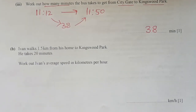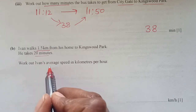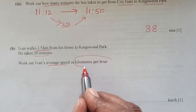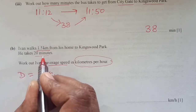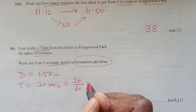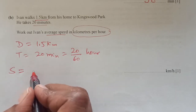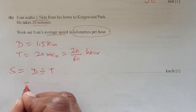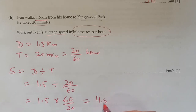Part B: Ivan walks 1.5 kilometres from his home to Kingswood Park. He takes 20 minutes. Work out Ivan's average speed in kilometres per hour. Distance is 1.5 km and time is 20 minutes, which we convert to hours by dividing by 60. Speed equals distance divided by time: 1.5 divided by (20/60), which equals 1.5 times 60 over 20. This comes out to be 4.5 kilometres per hour.